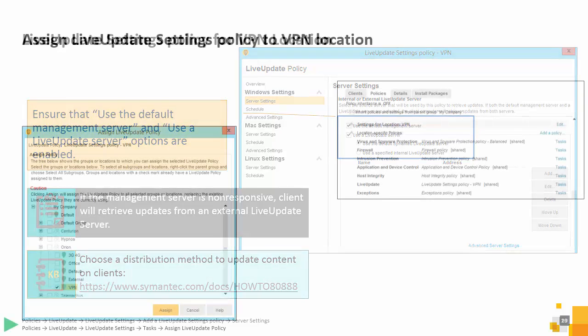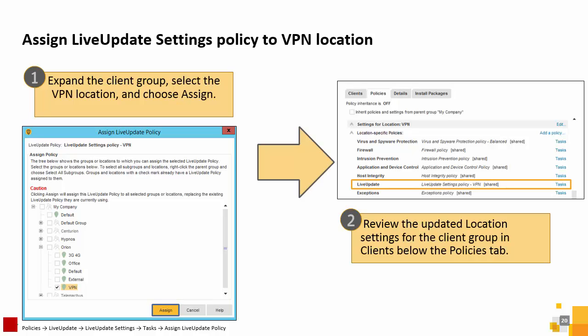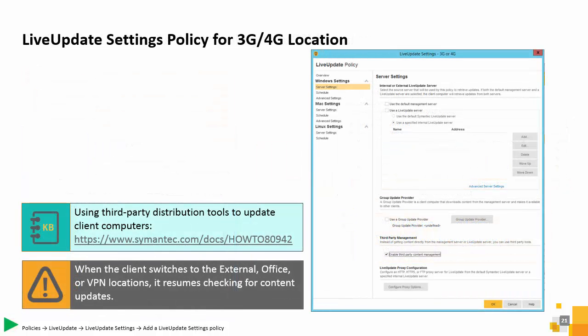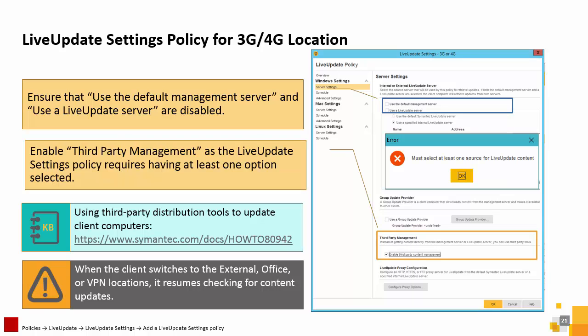The new policy is ready to be assigned to the VPN location. After the policy is assigned, you can review the updated location settings for the client group and clients below the Policies tab. For the 3G/4G location, both Use the Default Management Server and Use a Live Update Server options are disabled. Because the Live Update settings policy requires having at least one option enabled, enable third-party management. Third-party management means that distribution tools like Altiris, IBM Tivoli, or Microsoft SMS distribute updates to client computers.